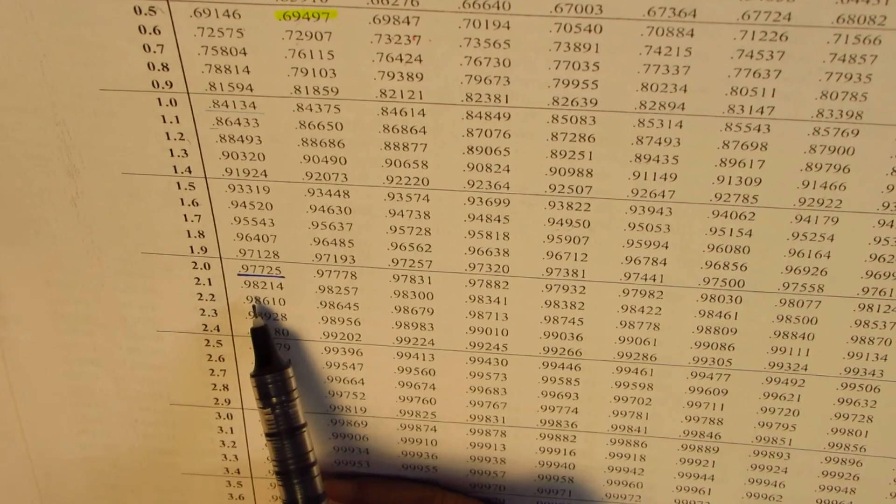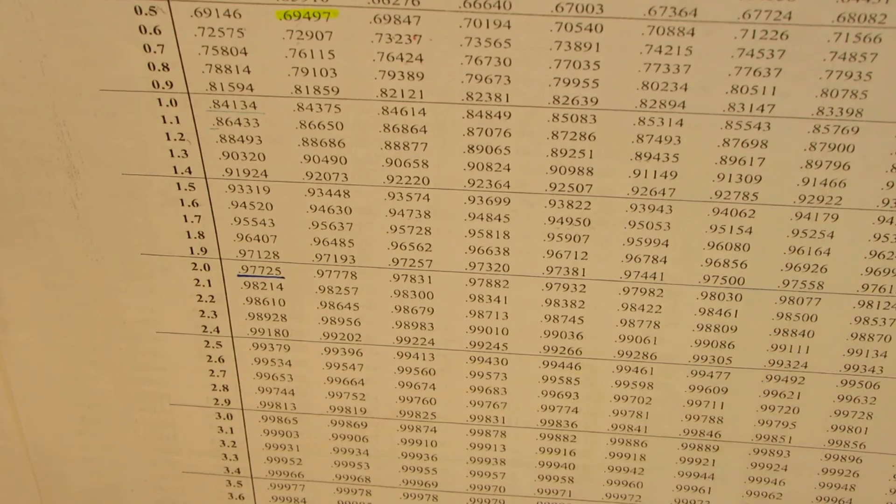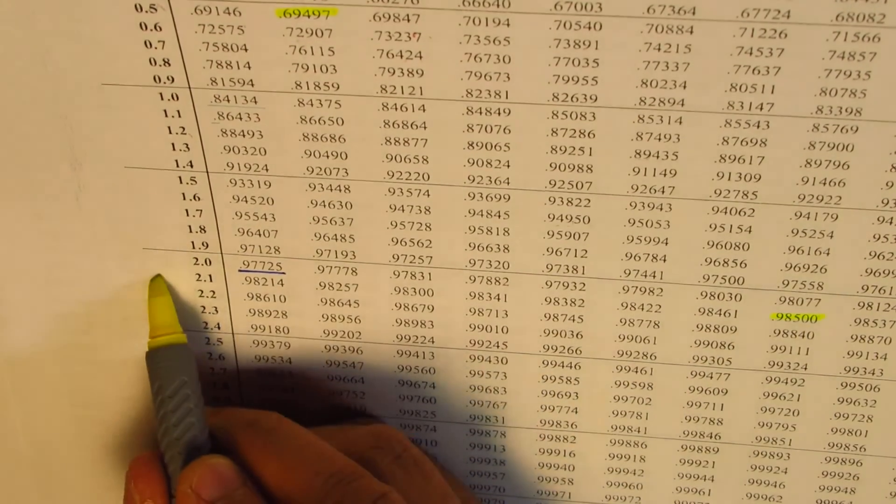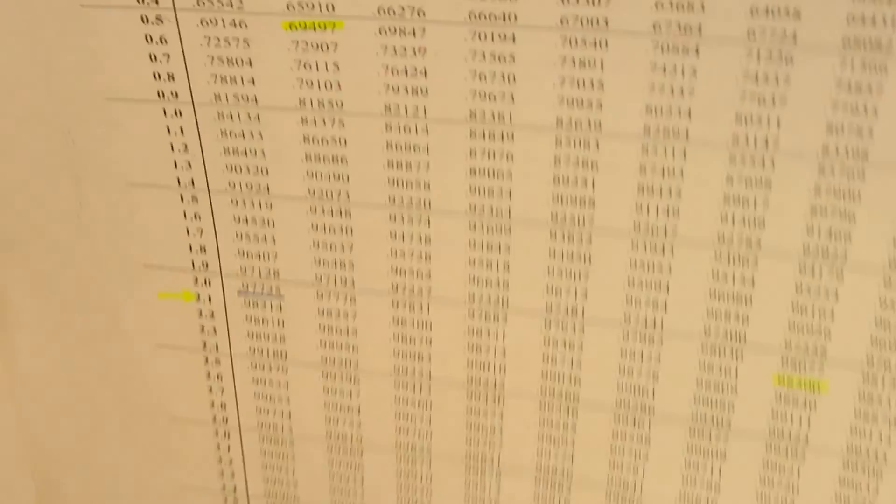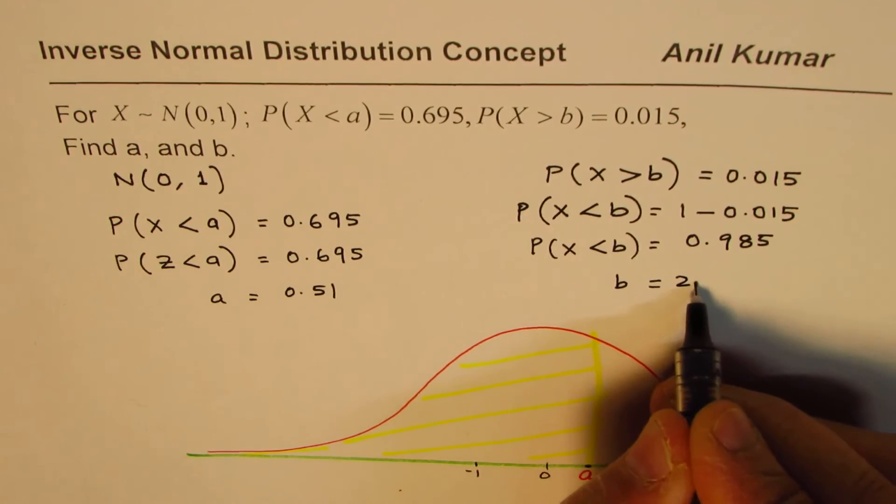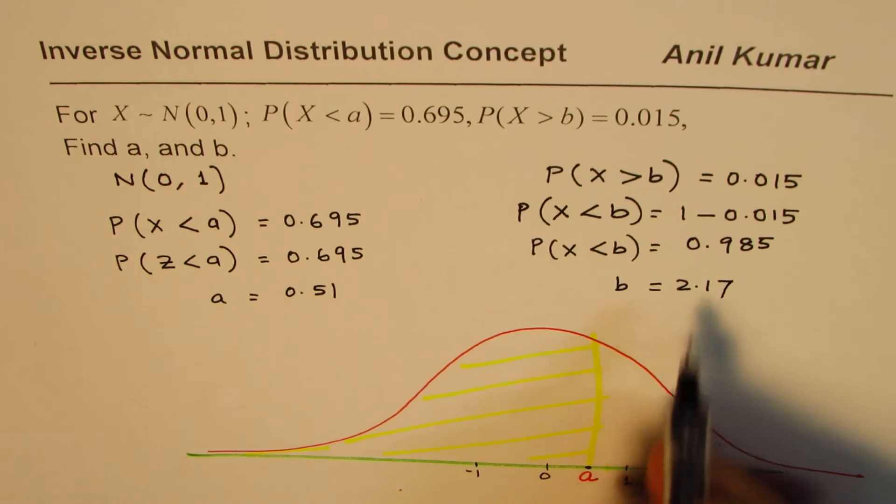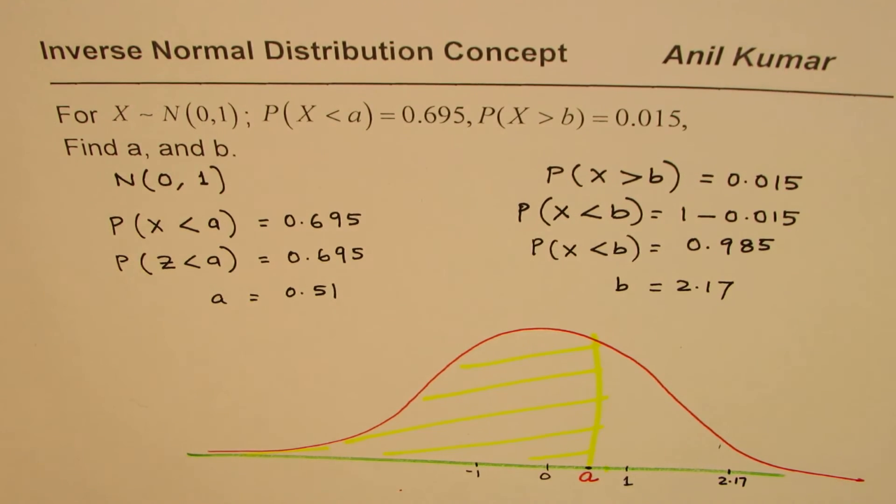So 0.98, and then you just go through this. 0.985 is right there, at this place, that is 0.985, which is for 2.1, and 100th place is 7, 2.17. So we get b as 2.17. That is what we get, 2.17. Let's say this is 2.17. This is the value for b for us.